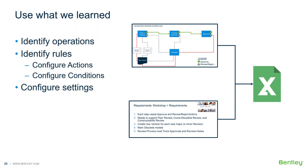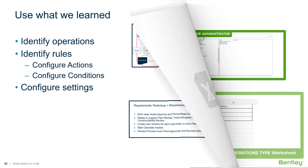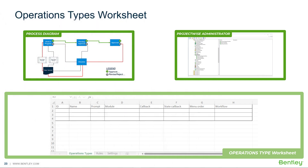How do we do this? Well, we use the business requirements and the process diagram to identify operations, rules, and settings. From the process diagram, we will configure the appropriate operations on the operations types worksheet.